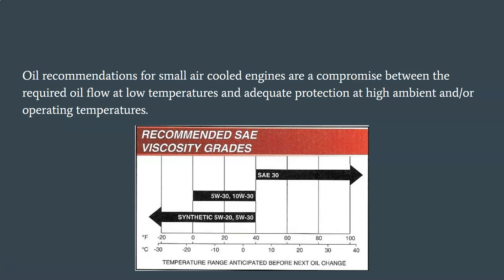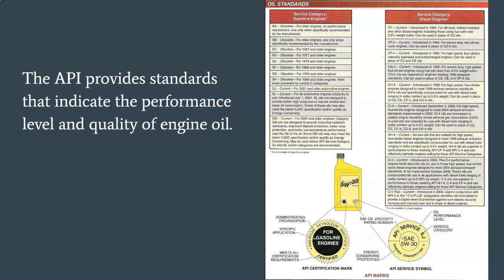Oils recommended for small air-cooled engines are based on the ambient operating temperature range anticipated before the next oil change. The API provides standards that indicate the performance level and quality of engine oil. The EOLCS program is designed to define, certify, and monitor engine oil performance necessary for satisfactory equipment life. API licensed marketers may display the API service symbol and certification mark. The API service symbol indicates oil performance level, oil viscosity, and energy conserving properties. The letter S indicates oil suitable for gasoline engines; the letter C indicates oil suitable for diesel engines.